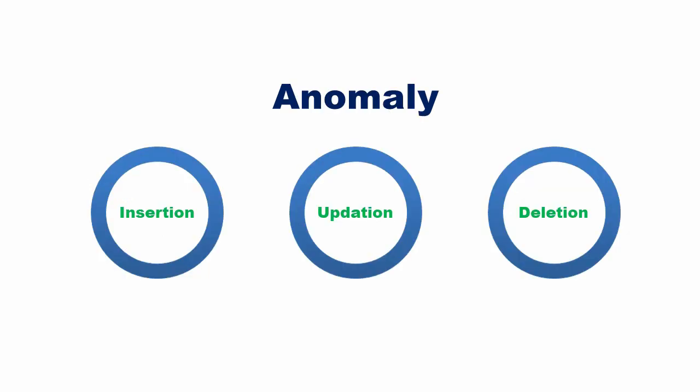In summary, data redundancy leads to three major problems: insert anomaly, update anomaly, and delete anomaly.